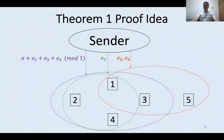The proof of the theorem in general is much more technically involved, in particular because we must deal with externalities between receivers. To overcome this, we use Harsanyi's universal type space. But at a high level, the proof is based on the same simple idea.